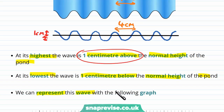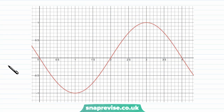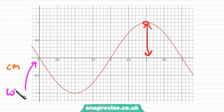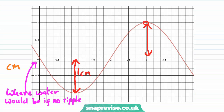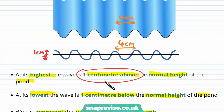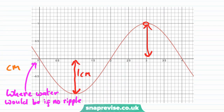Once we've done this we can represent our wave on a graph, measuring everything in centimetres. The top of the graph is 1cm above 0, where all the water would be if there was no ripple, and the bottom of the wave is 1cm below this level. One full cycle of the wave spans 4cm. So we have successfully managed to represent our wave on a piece of graph paper.